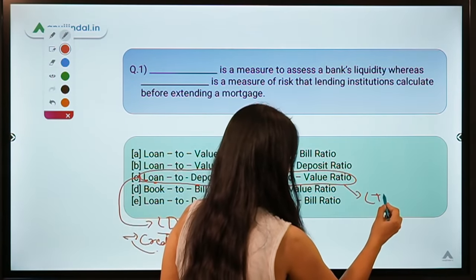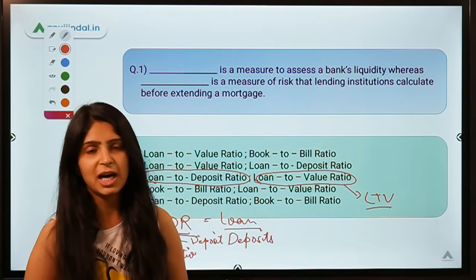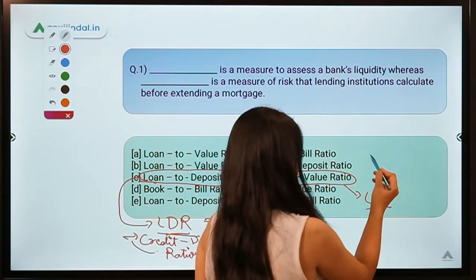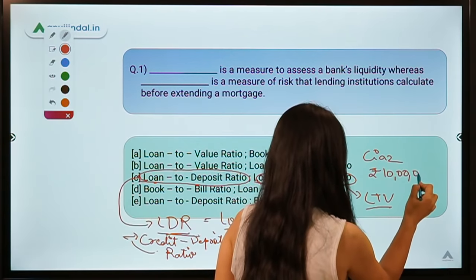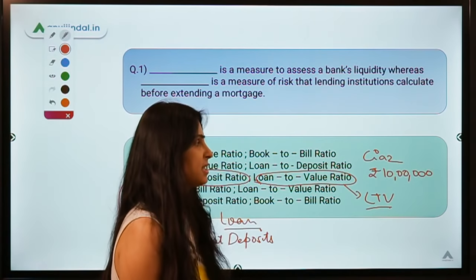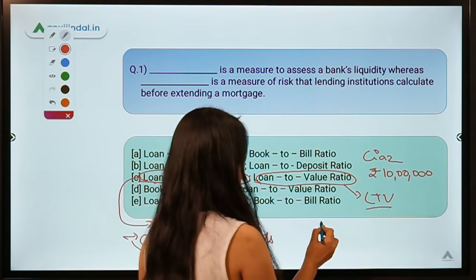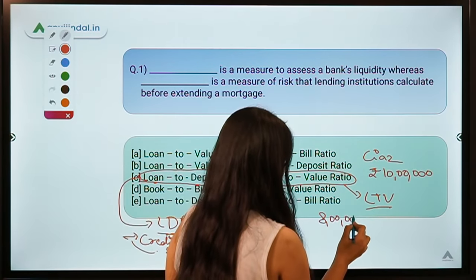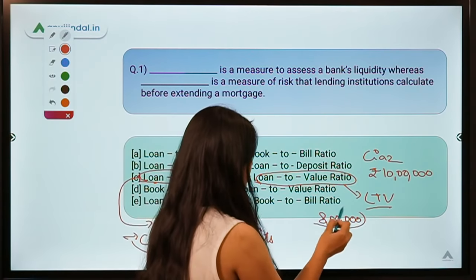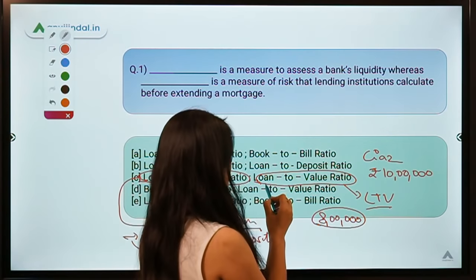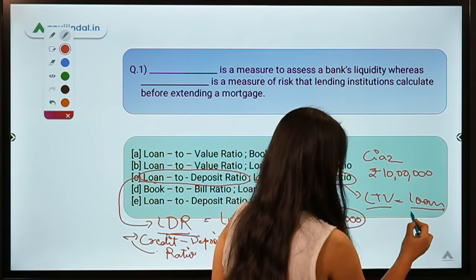Now for the Loan to Value Ratio (LTV): let's say I want to buy a Maruti car costing rupees 10 lakh. Since I don't have 10 lakh, I borrow from the bank. The bank says it can give me a maximum loan of 8 lakh, meaning 2 lakh must be paid as a down payment. So the loan amount is 8 lakh.